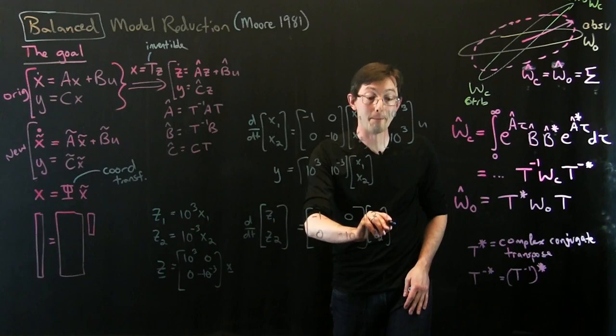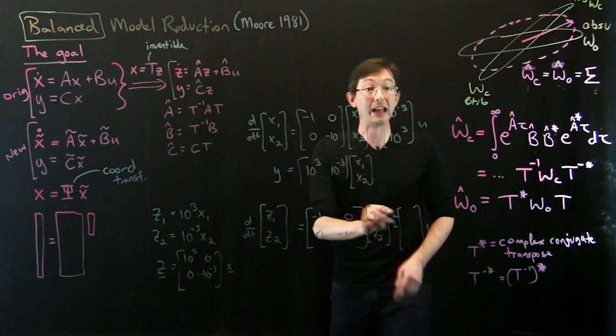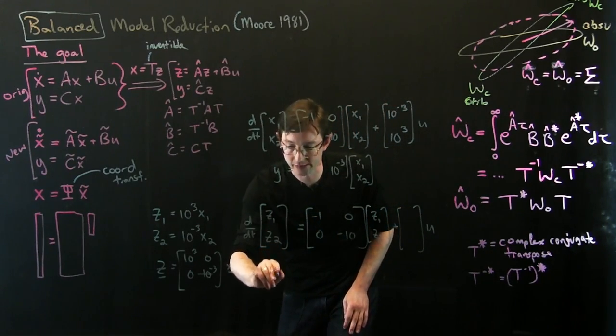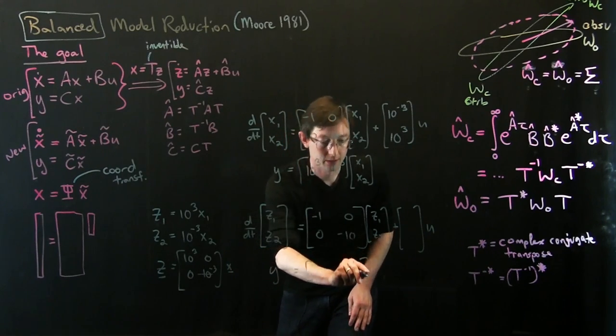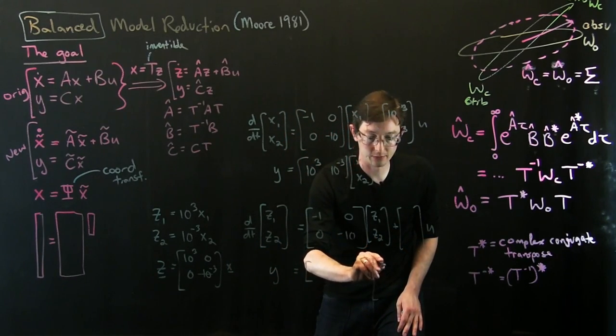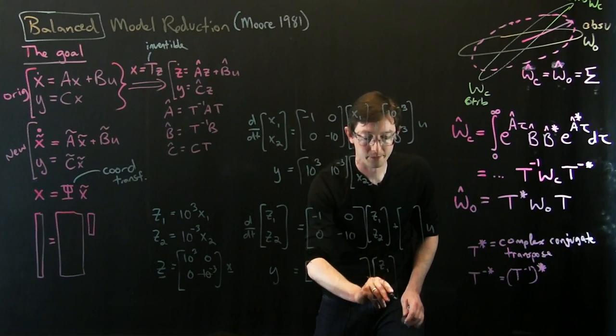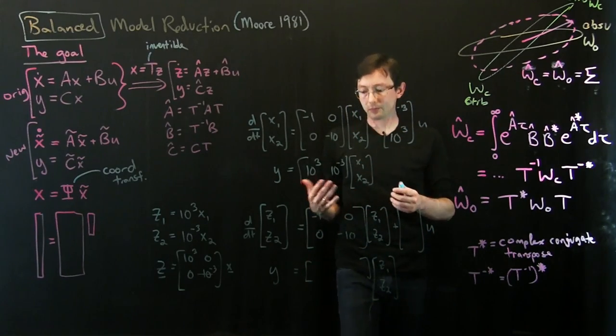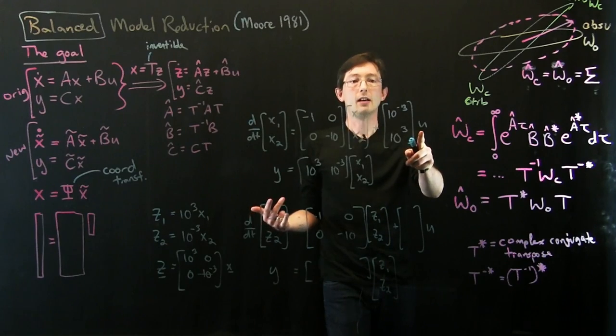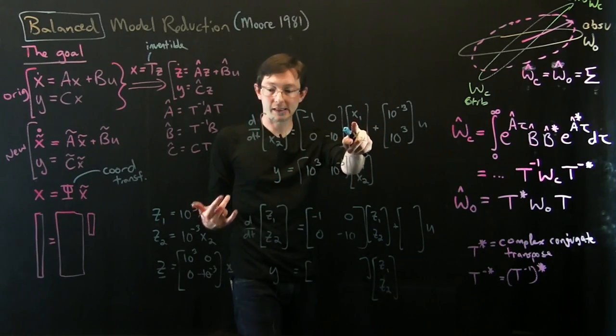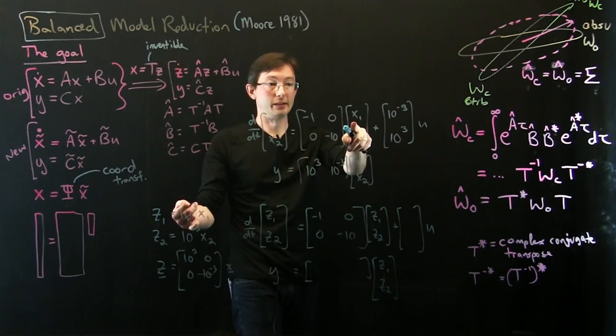But what's going to be dramatically different are these B-hat and C-hat vectors. So this is where it gets really interesting. I'm going to just write this all out. So u now affects... What I did was I made this x1 state. I multiplied it by a thousand.